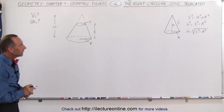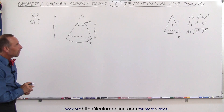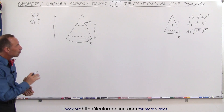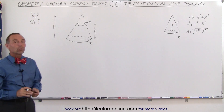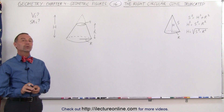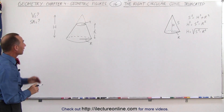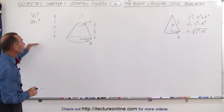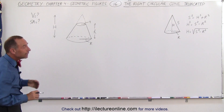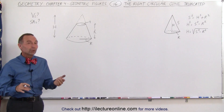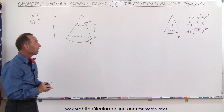Welcome to ElectronLine. Here we have what we call a truncated right circular cone. If we're going to find the volume and the surface area, we need to come up with a few more tricks.